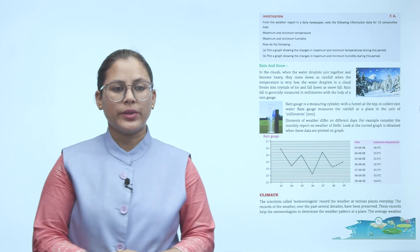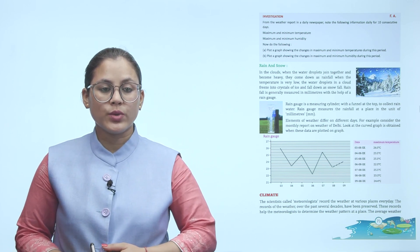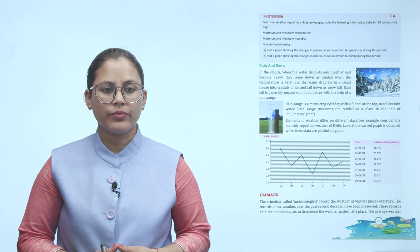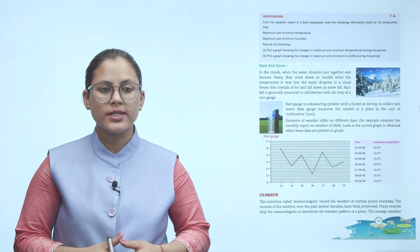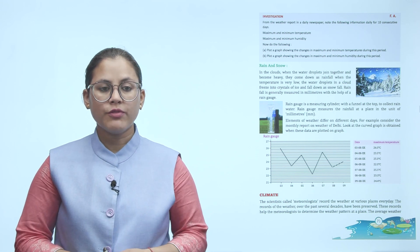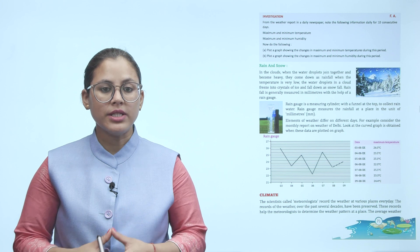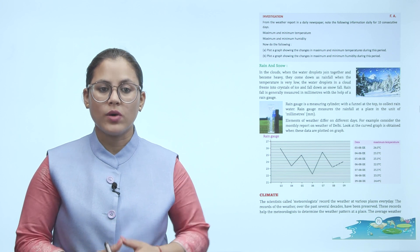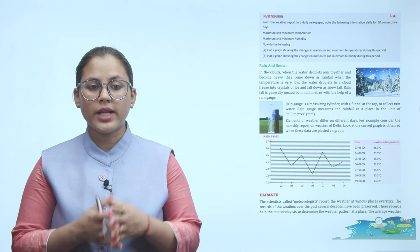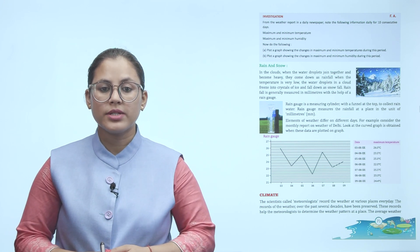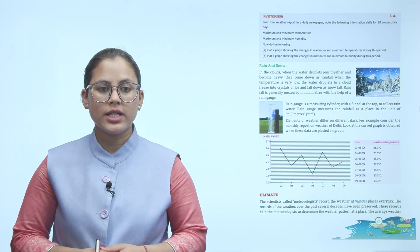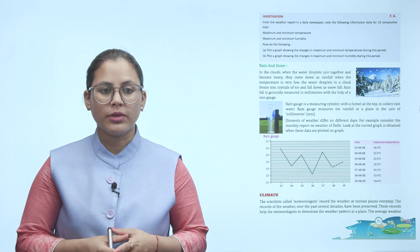Rain and snow: In the clouds, when water droplets join together and become heavy, they come down as rainfall. When the temperature is very low, the water droplets in a cloud freeze into crystals of ice and fall down as snowfall. Rainfall is generally measured in millimeters with the help of a rain gauge. A rain gauge is a measuring cylinder with a funnel at the top to collect rainwater.